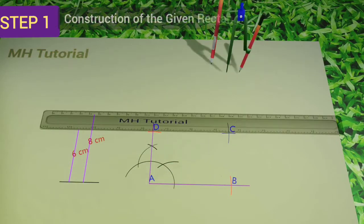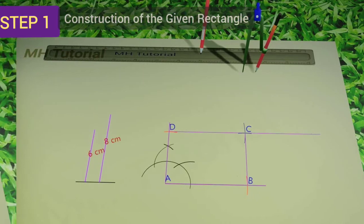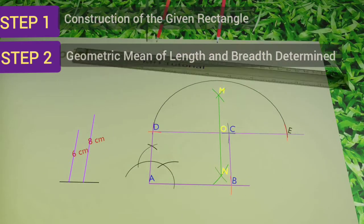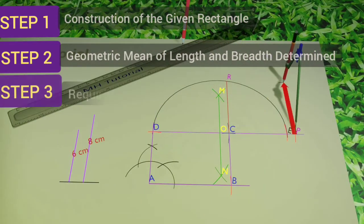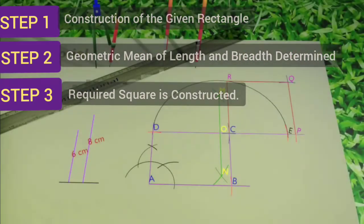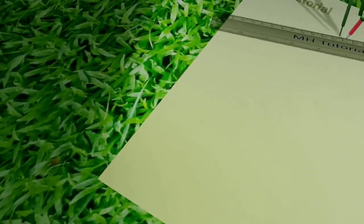In the first step, the given rectangle is to be drawn. In the second step, the geometric mean of the length and the breadth of the rectangle has to be determined. Then in the third or last step, you have to draw the required square with sides equal to the geometric mean. So let's get started.